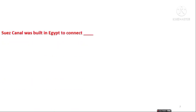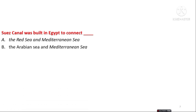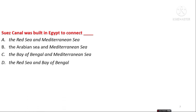The next question is: the Suez Canal was built in Egypt to connect which two bodies of water? The options are the Red Sea and Mediterranean Sea, the Arabian Sea and Mediterranean Sea, the Bay of Bengal and Mediterranean Sea, and the Red Sea and Bay of Bengal. Option A is the right answer — the Red Sea and Mediterranean Sea were connected by the Suez Canal in Egypt.